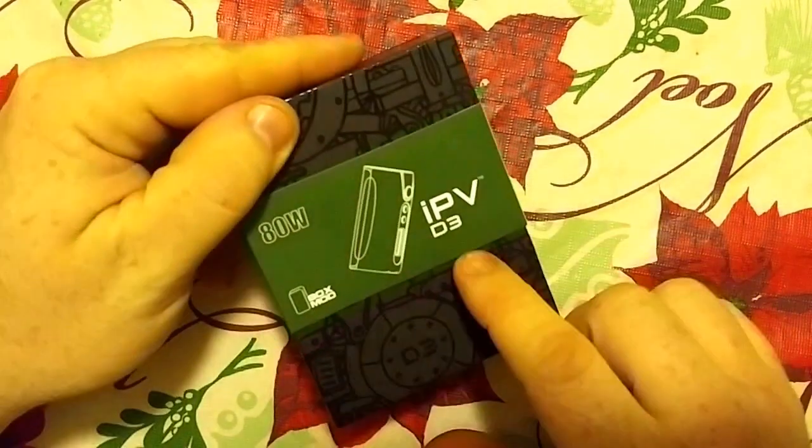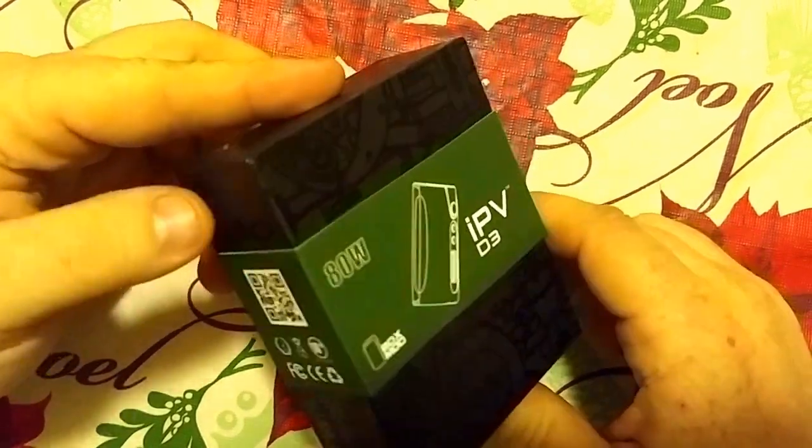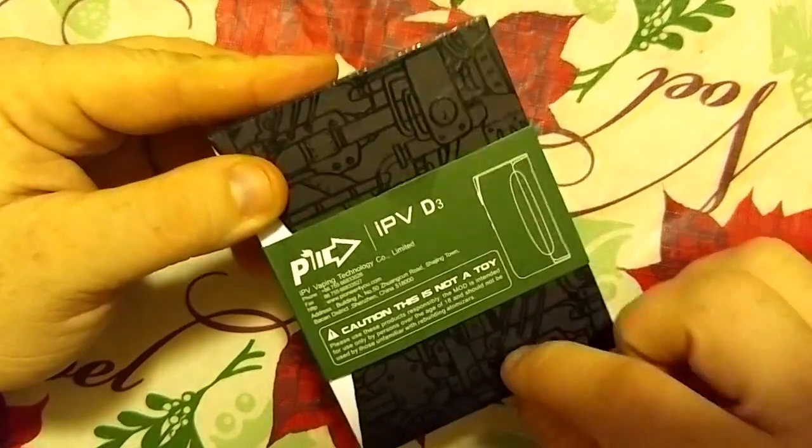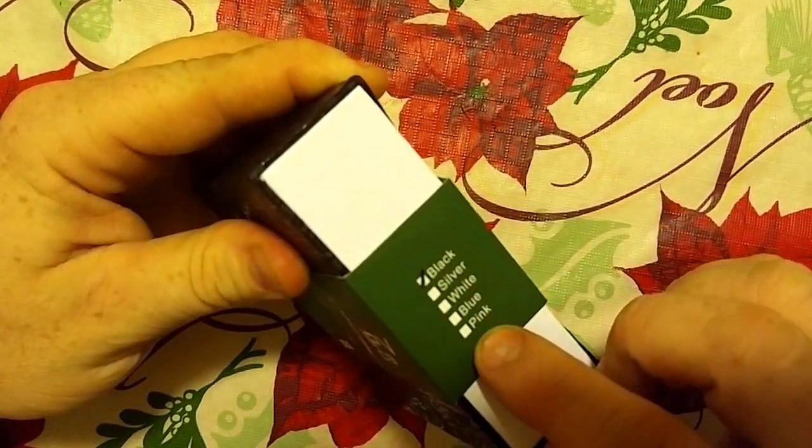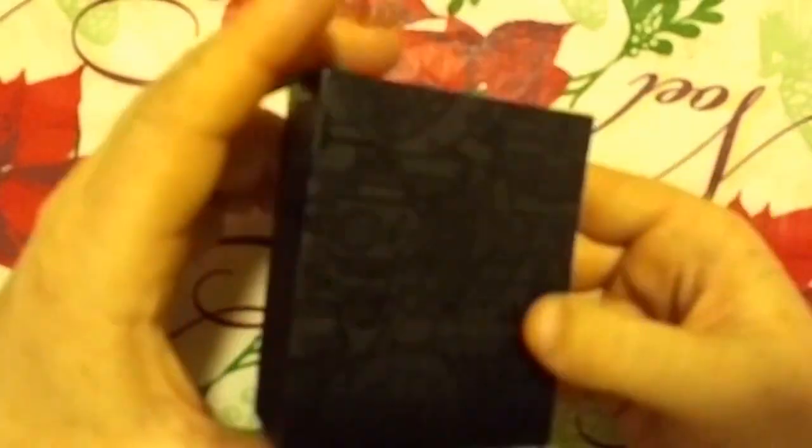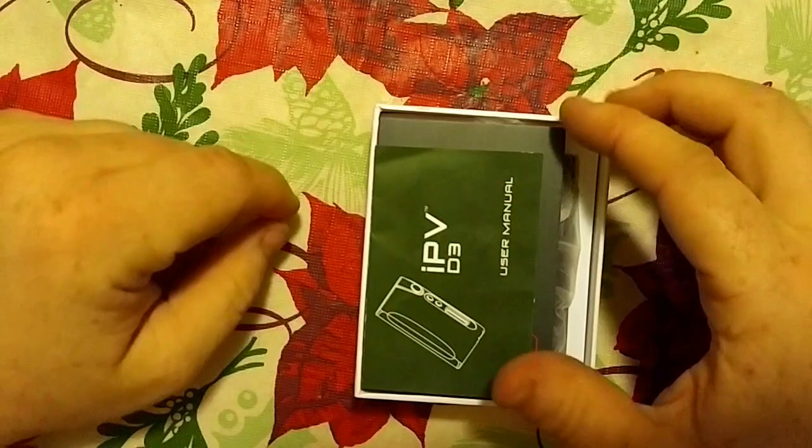This is the IPV D3. It is an 80 watt machine. This is the packaging that comes in. It has a nice little sleeve. And they actually call this a gift box. I got the black one. It does come in different colors. You're just going to slide this little sleeve off. Pop the box open. And there she is.